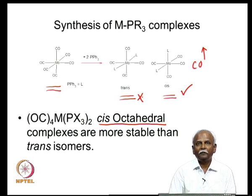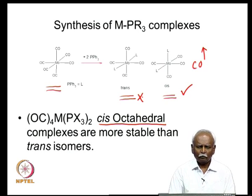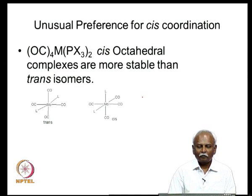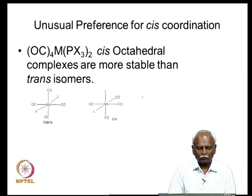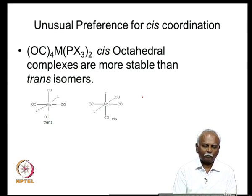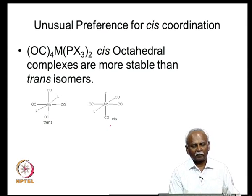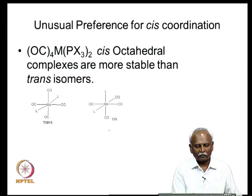If you look at the complex itself, carbon monoxide has no great steric influence — it is only the phosphorous-containing ligand which has steric influence. To pack 2 phosphorous-containing ligands around molybdenum, the trans geometry would seem preferable since the 2 L groups would be far apart. But surprisingly, the cis complex is formed and the trans complex is not. There must be an electronic reason for this particular preference.